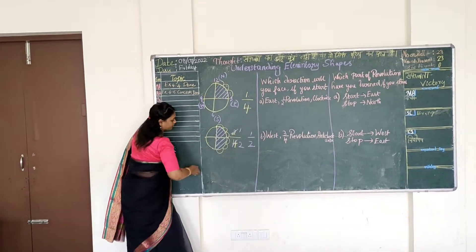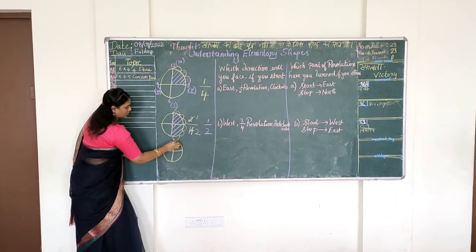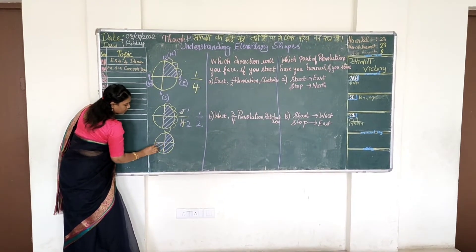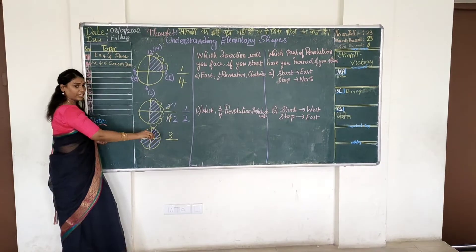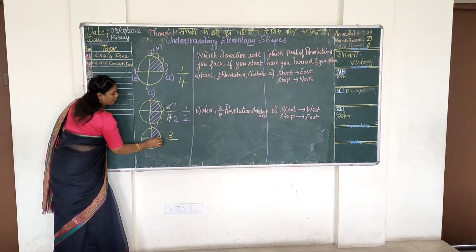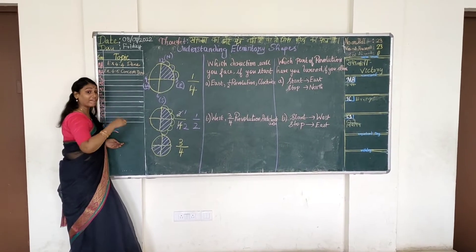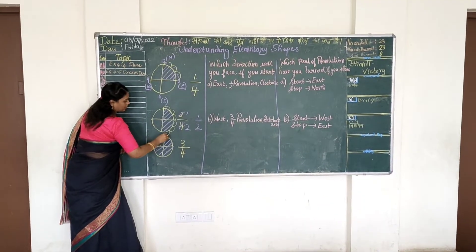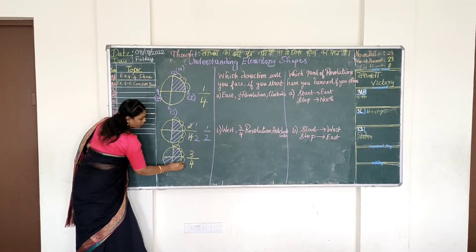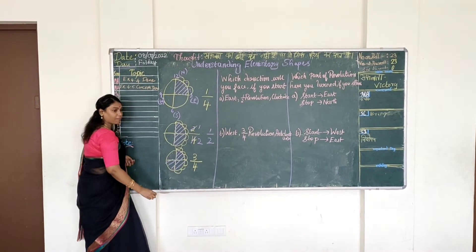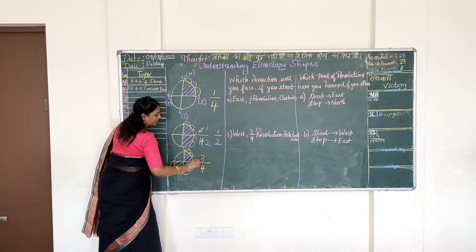If I shade 3 parts, the fraction is 3 by 4. How many times am I turning? For 1/4 part — 1, 2, 3. For half part — 4, 5, 6. Then 7, 8, 9. Totally 9 times I am turning for a 3/4 revolution.